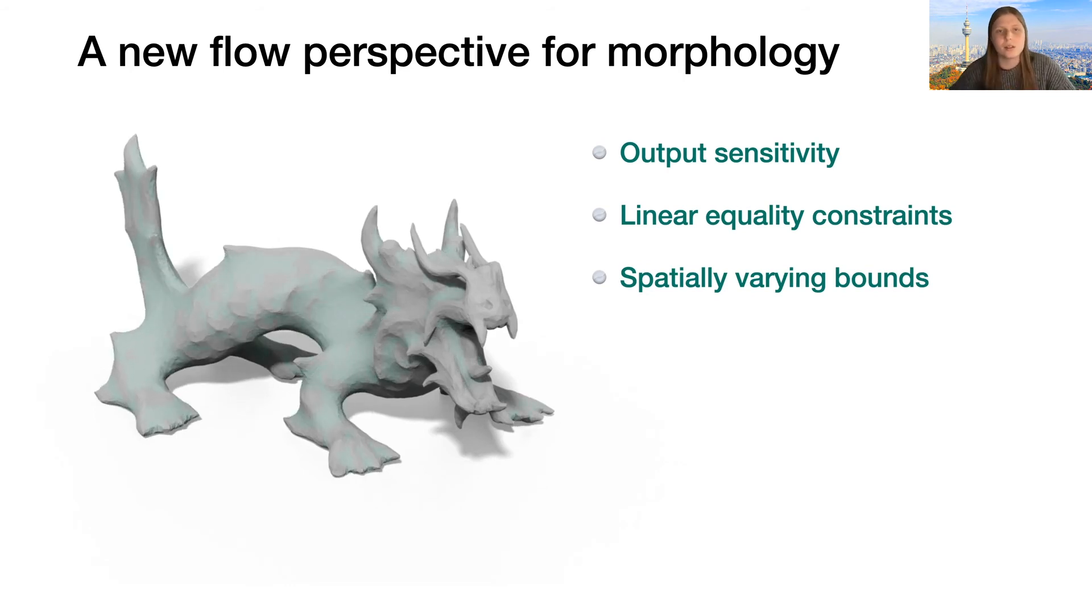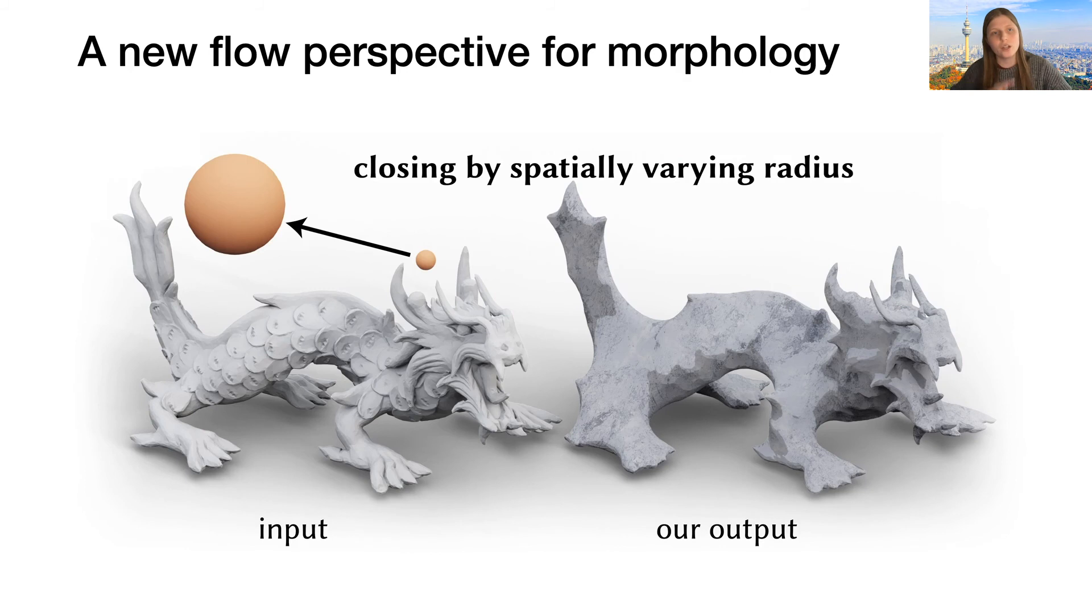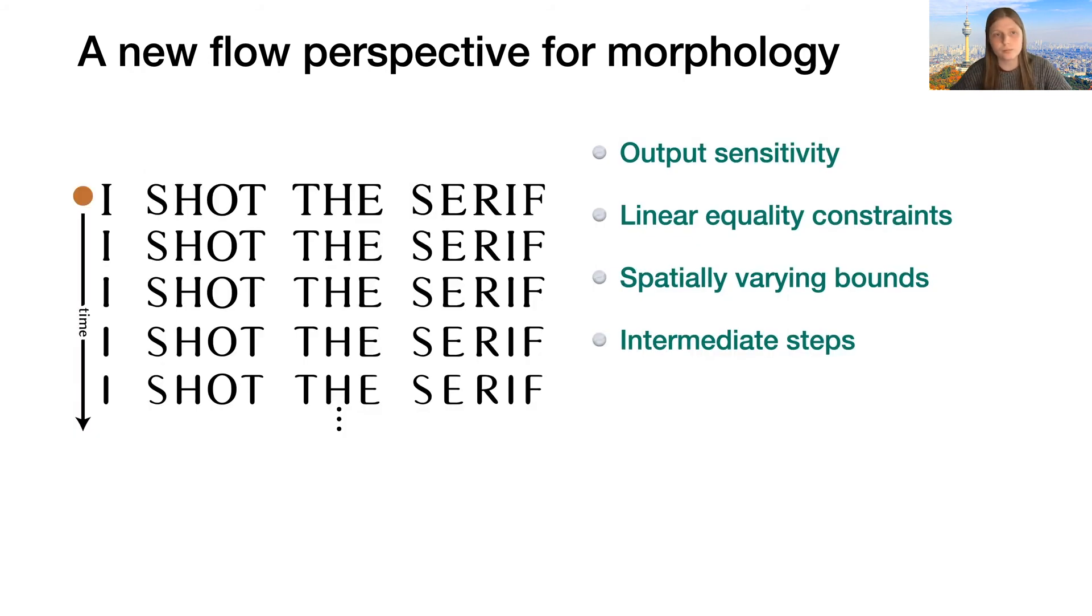Similarly, each point is checked separately against the curvature's threshold, so without any added effort, we can make this threshold spatially varying, like in this example. Note how the output maintains many of the features in the top of the dragon, but smooths much of the bottom part. We can also make use of intermediate steps of our flow, which have no analog with the traditional dilation and erosion formulation, for example, for progressive smoothing, as in this example.